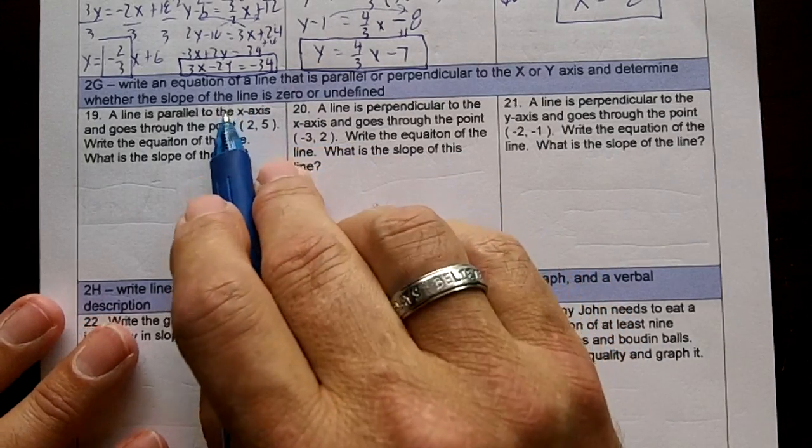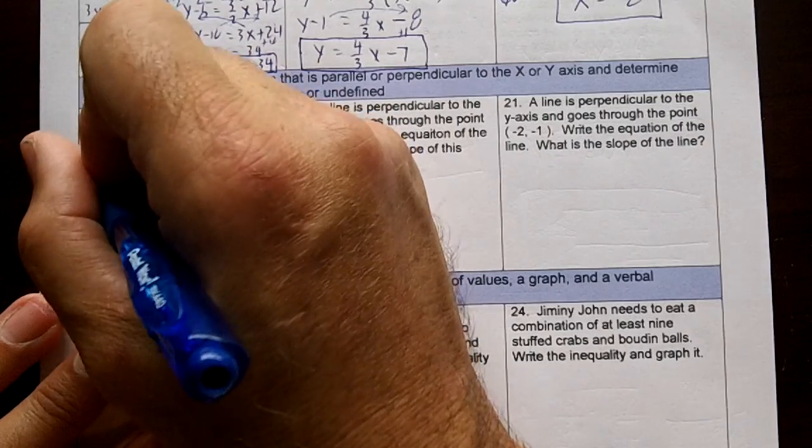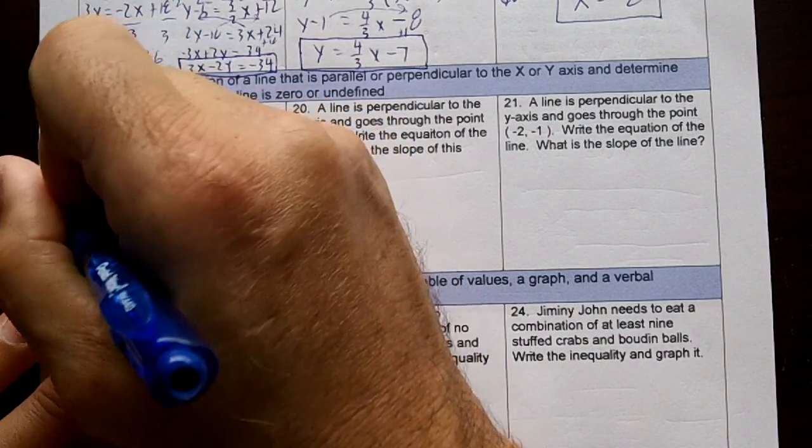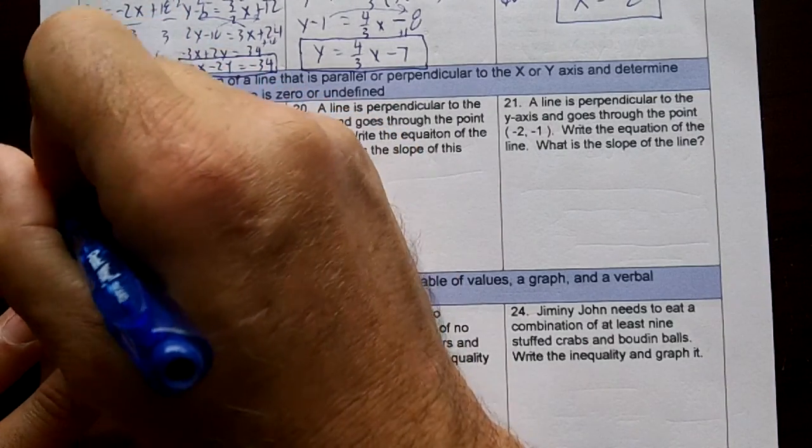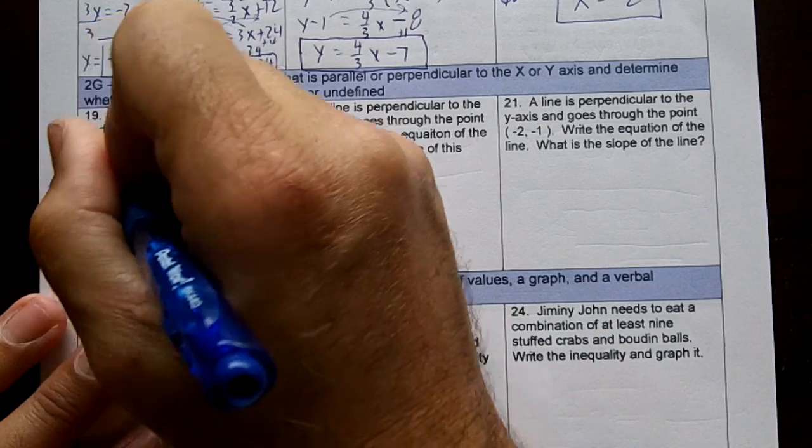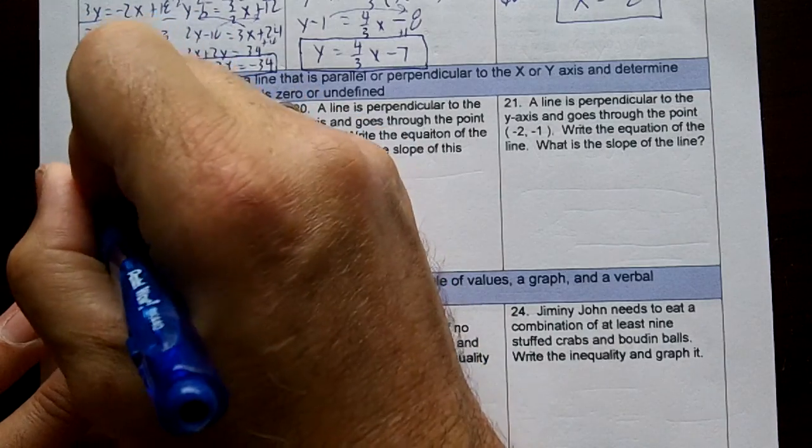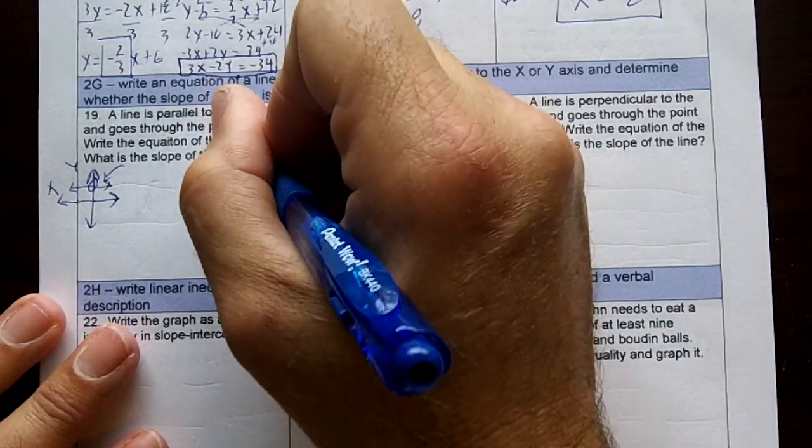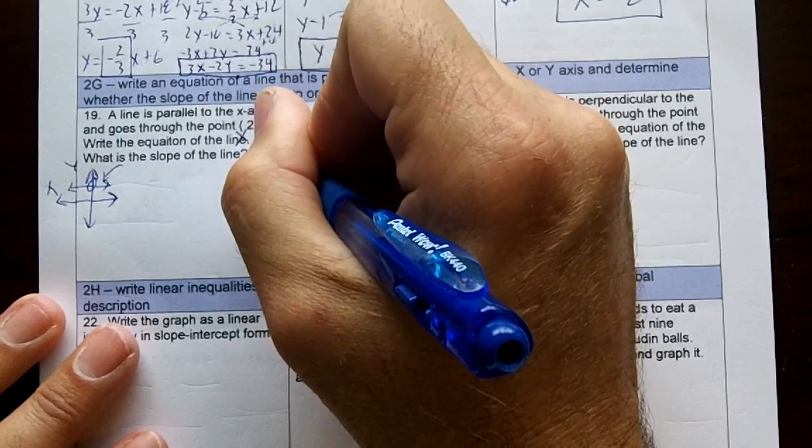A line is parallel to the x-axis. If it's parallel to the x-axis, if this is my x-axis and this is x and y, if it's parallel to the x-axis, it's going to cross the y-axis, and goes to the point. This would be my x, this would be my y.